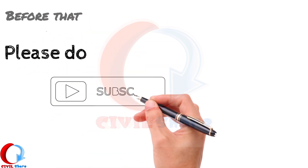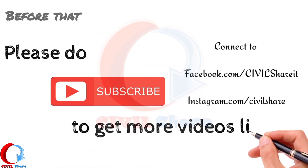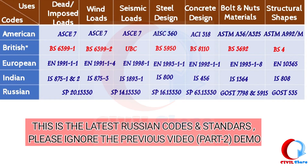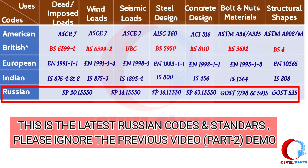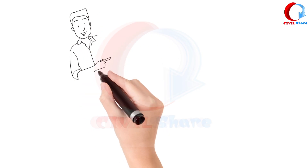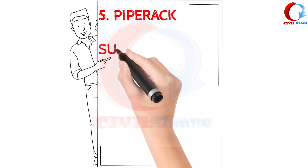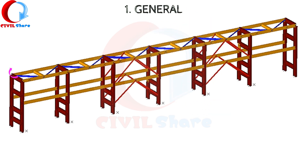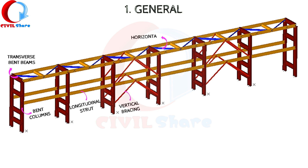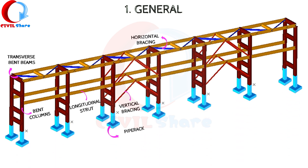Please subscribe to get more videos like this. The principal structural components of a Pipe Rack are: the transverse bent beams, the bent columns, longitudinal struts, vertical bracing, horizontal bracing, and foundations.